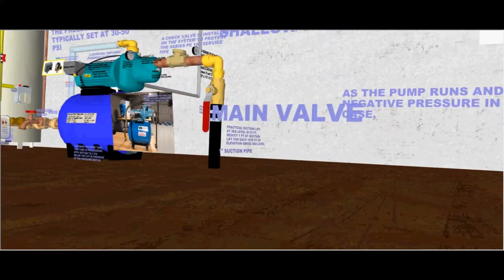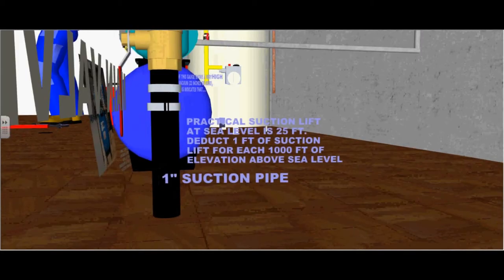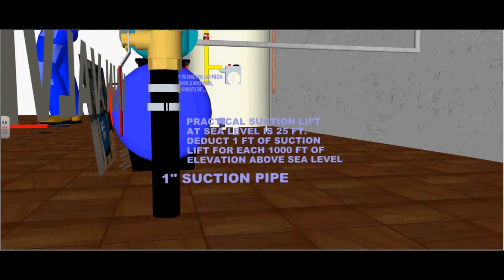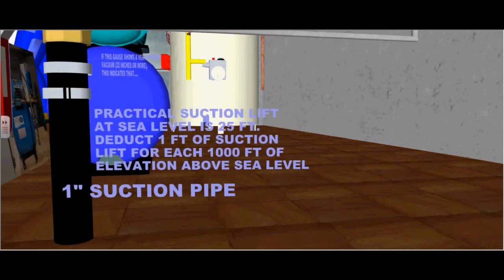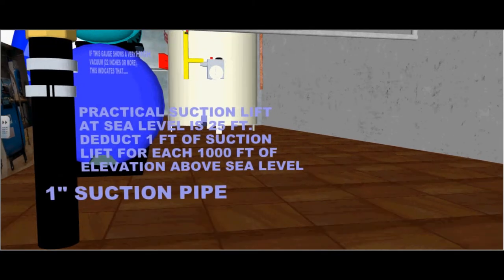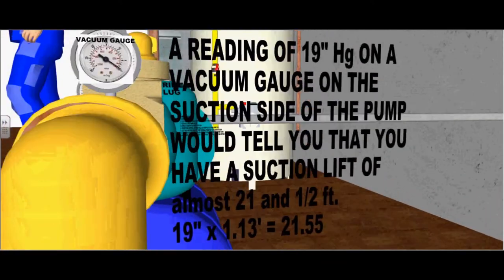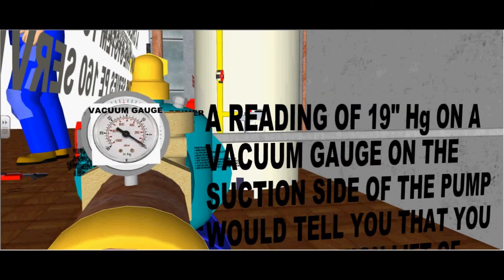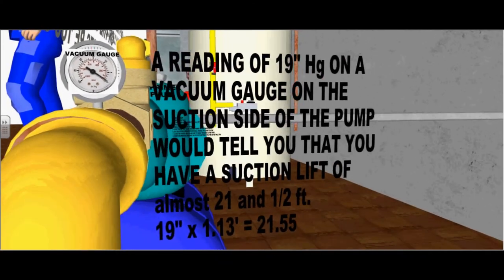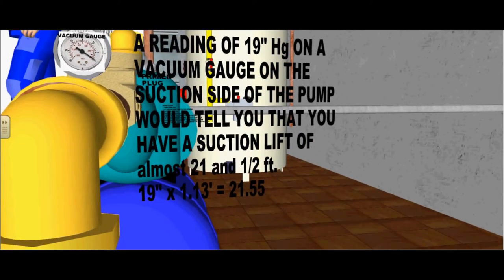This is the 1 inch drop pipe. Practical suction lift at sea level is 25 feet. Deduct 1 foot of suction lift for every 1000 feet of elevation above sea level. A reading of 19 inches mercury on the vacuum gauge on the suction side of the pump will tell you that you have a suction lift of almost 21.5 feet. 19 inches times 1.13 feet equals 21.55 feet.